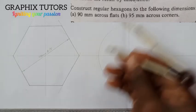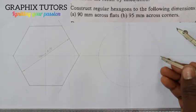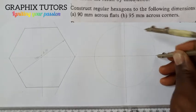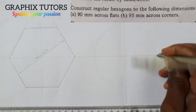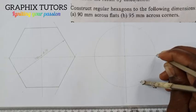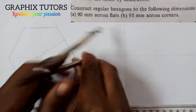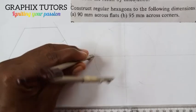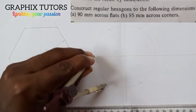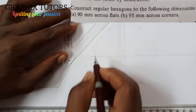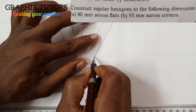The difference is that for across corner I'll use my compass. I place the same radius used to draw the circle at one end, strike up and strike down. At the other end also, I'll strike up and strike down.